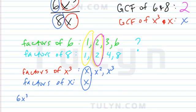6x to the third power over 8x. So on the top, I'll divide by the greatest common factor of 6 and 8, which is 2. And on the bottom, I'm going to divide by the greatest common factor of 6 and 8, which is 2. And then what do I get? I get 3x to the third power. And then for 8x divided by 2, I get 4x.